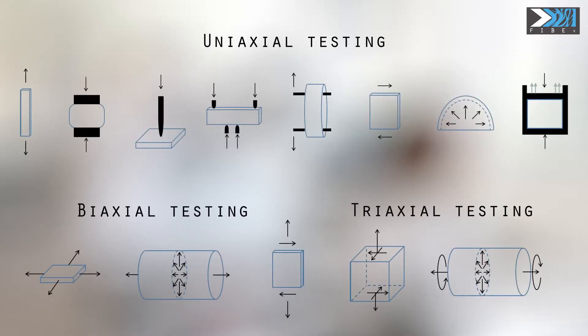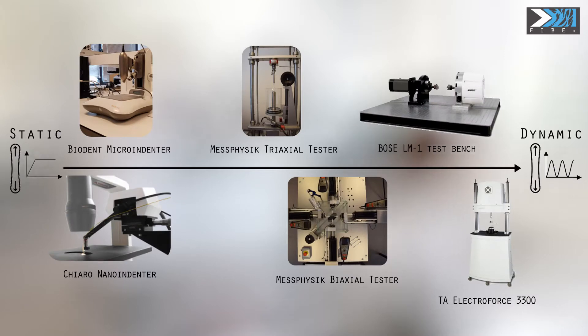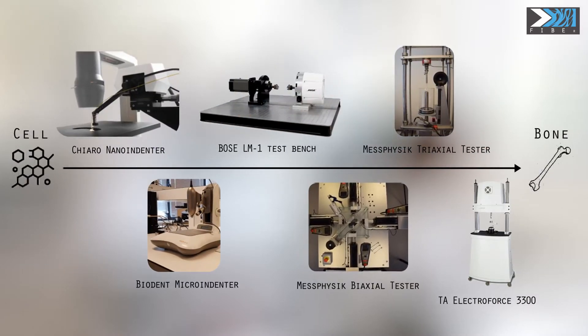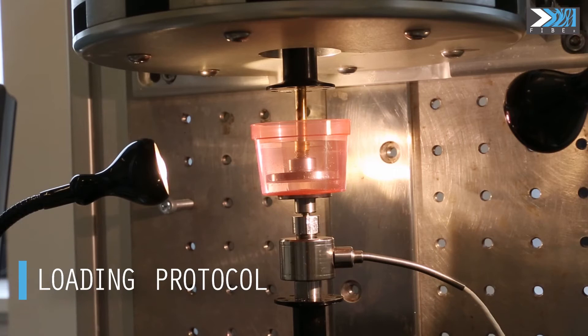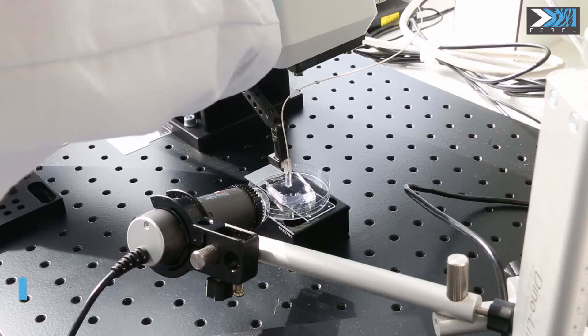That is why we at Fiber have a wide range of mechanical testing devices so that we can test along multiple axes if necessary, quasi-statically or dynamically, and for tissues as small as a single cell up to large skeletal bones. We take great care to design the perfect loading protocol for every application.